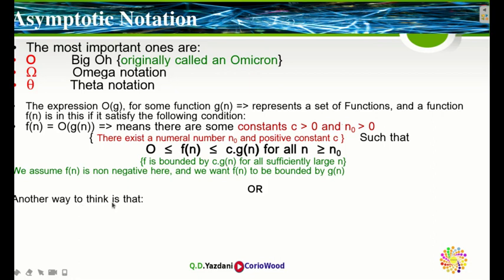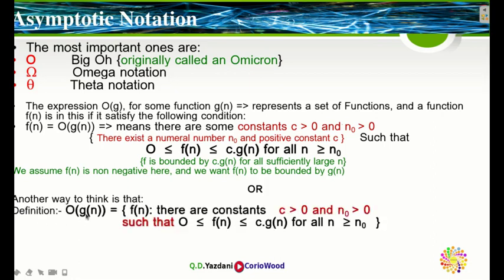Another way to define it: O(g(n)) is the set of f(n) where there exist constants c greater than 0 and n naught greater than 0 such that f(n) is bounded by c*g(n) for all sufficiently large n. So those are two ways to think of f(n) = O(g(n)) — both mean the same thing.